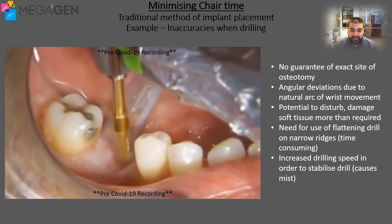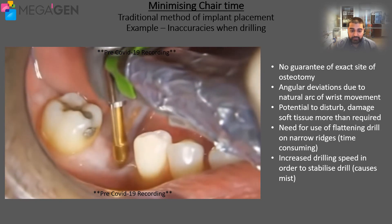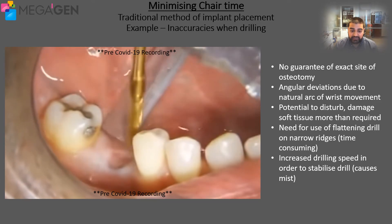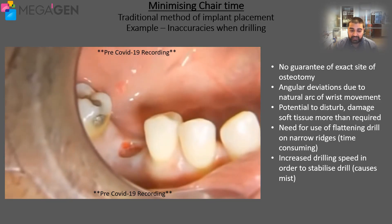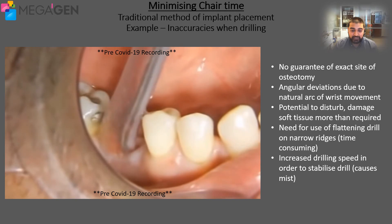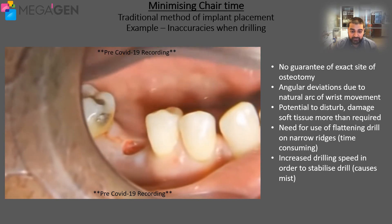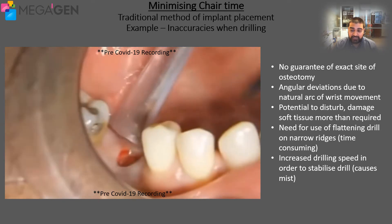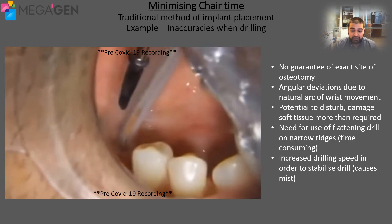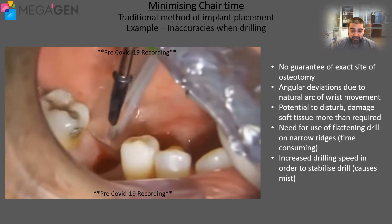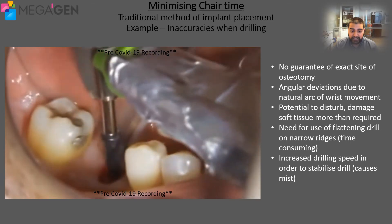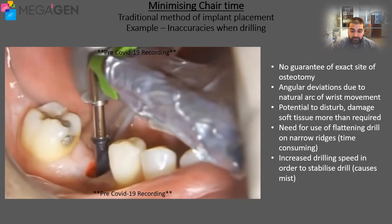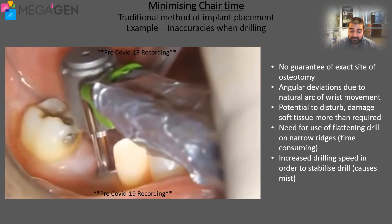Drills typically have at least two cutting edges, meaning that the apex of the drill has a dead spot built into the design where there is no cutting action taking place. This dead spot can actually cause the drill to drift on the surface of the bone until the bone has been punctured, meaning that there is a chance for the site of the osteotomy to have drifted from the actual intended site. This drifting motion could also cause damage to the soft tissue in the area.